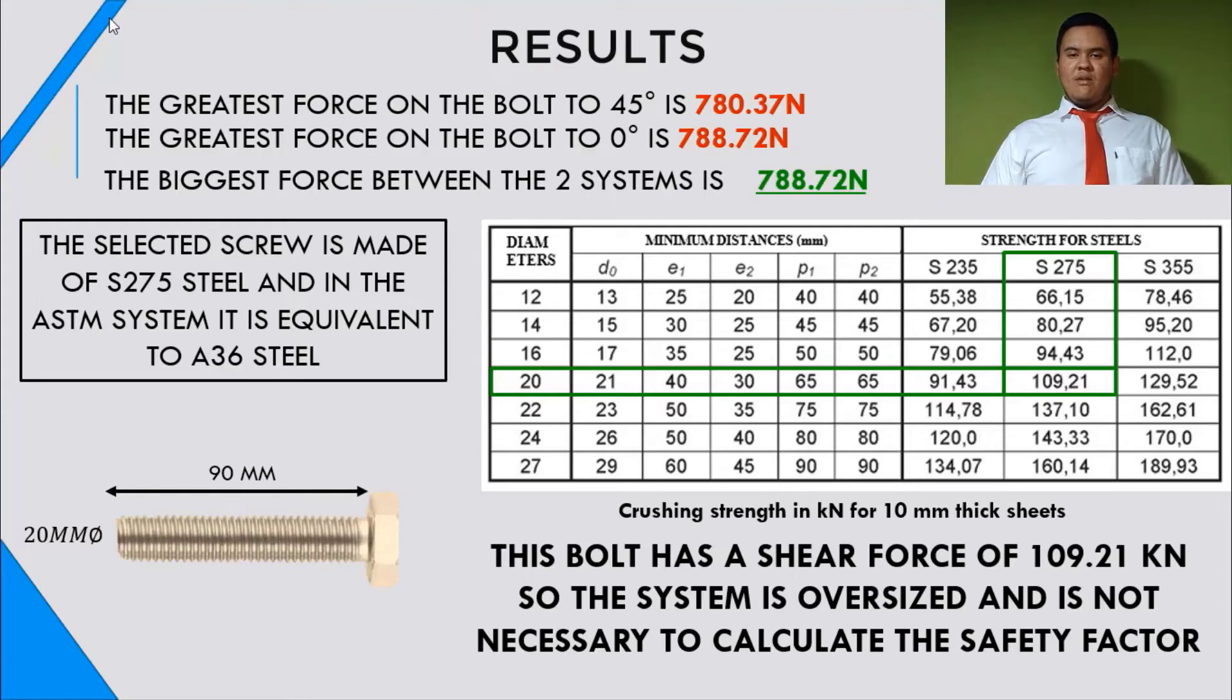But the bolt we use is for 20mm of diameter and 90mm of length. So the strain resistance is 10,822. So the safety factor is not necessary to calculate here because this system was calculated based on beam analysis. So the beam has more shear force than a bolt. For this reason, our system is oversized and we don't need to calculate the safety factor because our system is oversized.